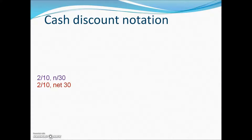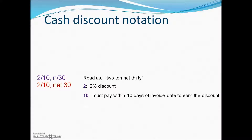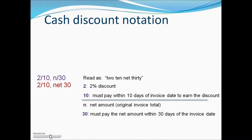So what does that notation mean? Here we have a couple of examples. It's read 2/10 net 30, where the 2 stands for a 2% discount — a savings — if paid within 10 days of the invoice date. Otherwise, N or net amount, which is the original invoice, is due in 30 days from the invoice date.